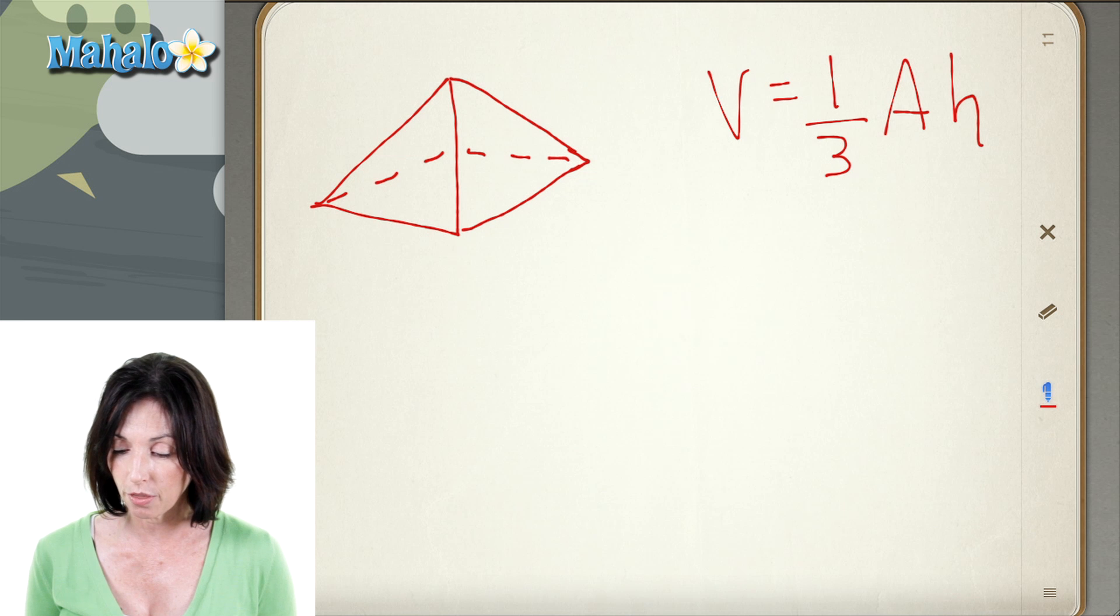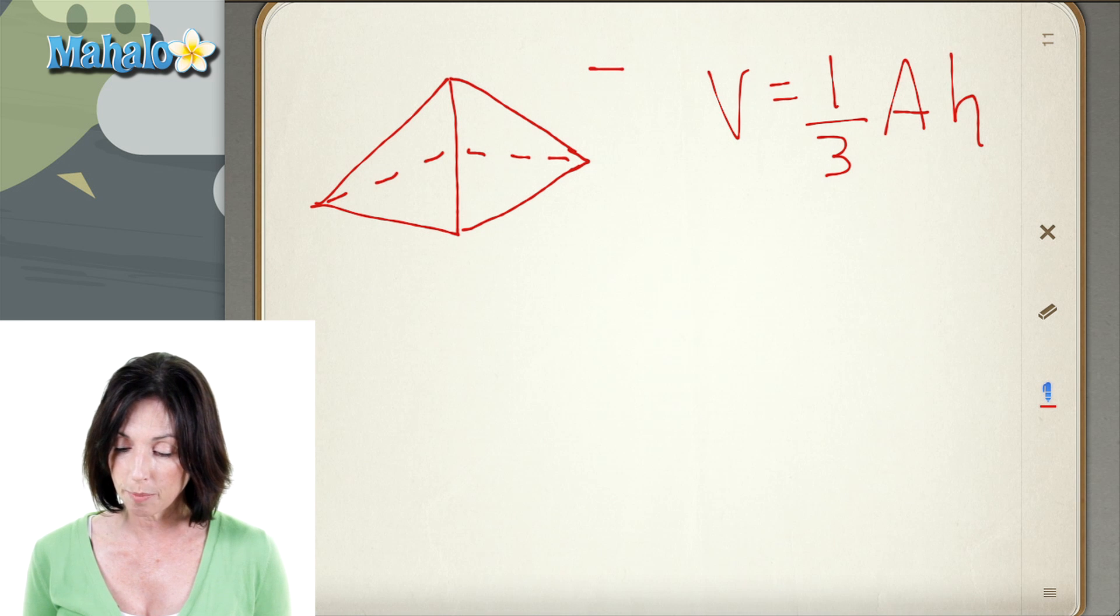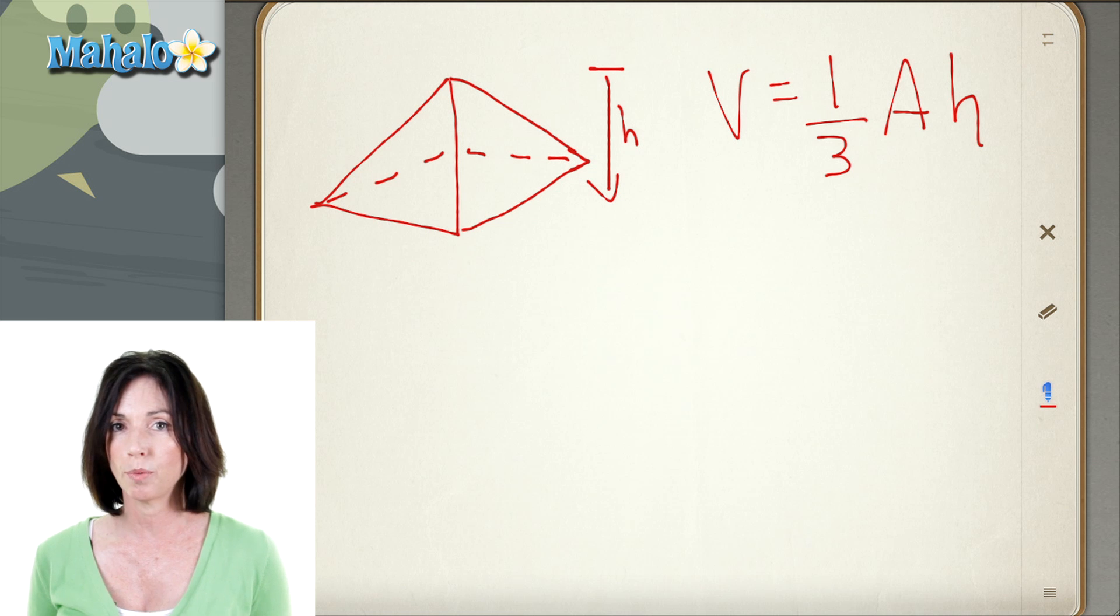Now the height has to be the vertical height, the distance from the tip of the pyramid down to the base. That's the height that you want to find.